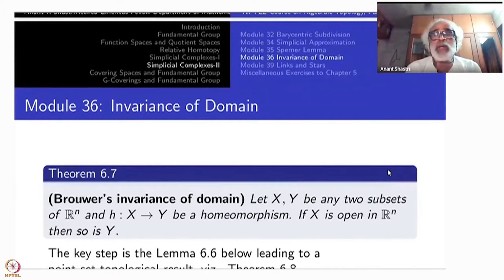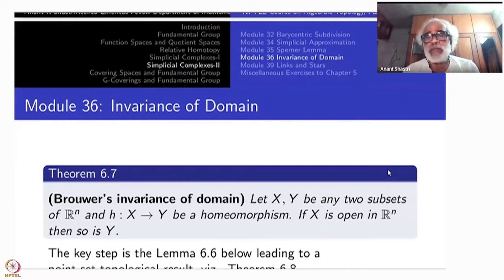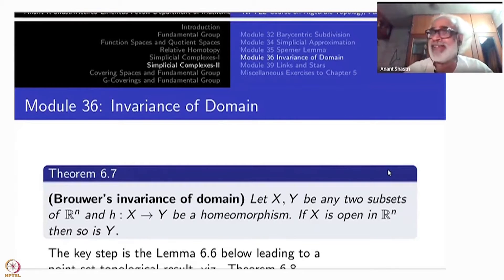How did we arrive at that result previously? We showed that Sⁿ and Sᵐ are not even homotopy equivalent to each other. That stronger result we would not have gotten from this theorem—Brouwer's Invariance of Domain only tells us Sⁿ and Sᵐ are not homeomorphic. But the fact that they are not even homotopy equivalent, proved through Brouwer's Fixed Point Theorem and Sperner's Lemma, is not achieved by this Big Theorem alone. That justifies proving that one separately.